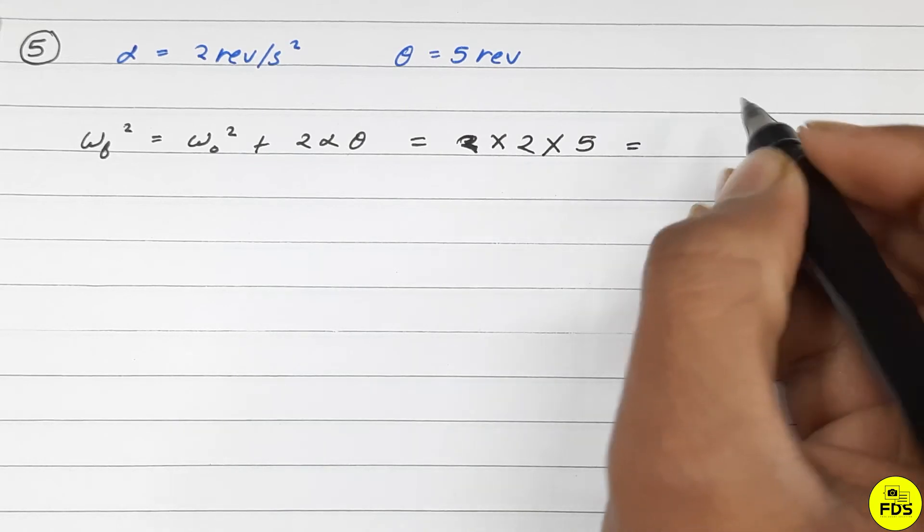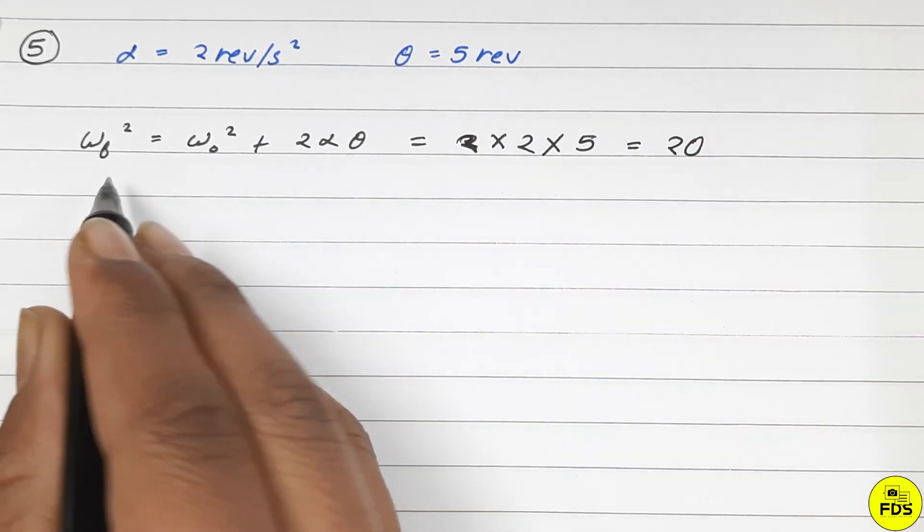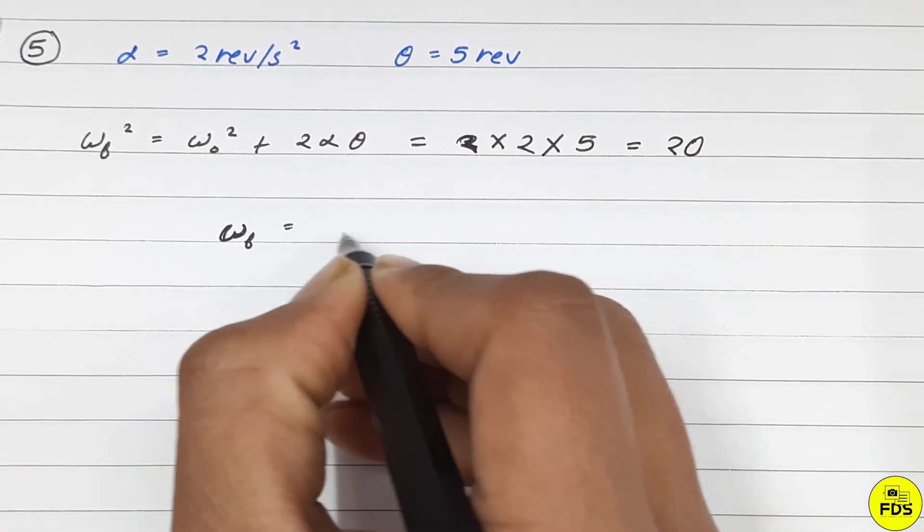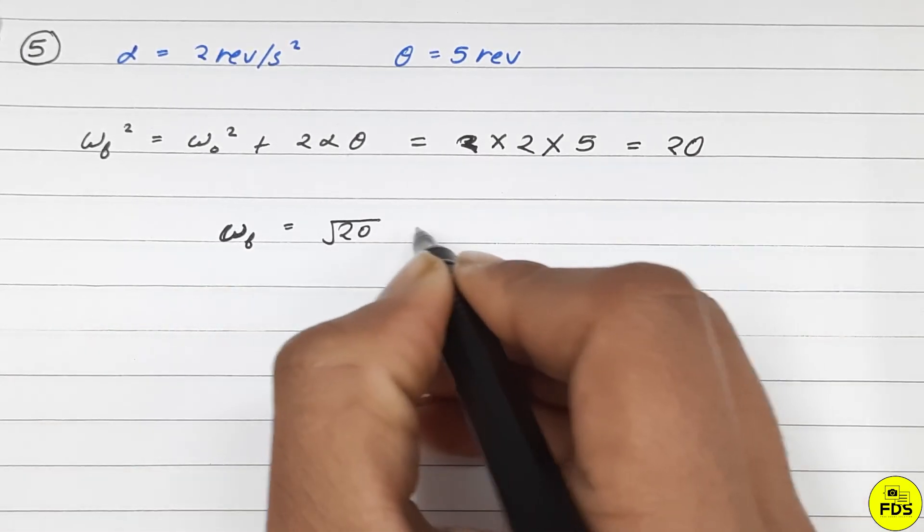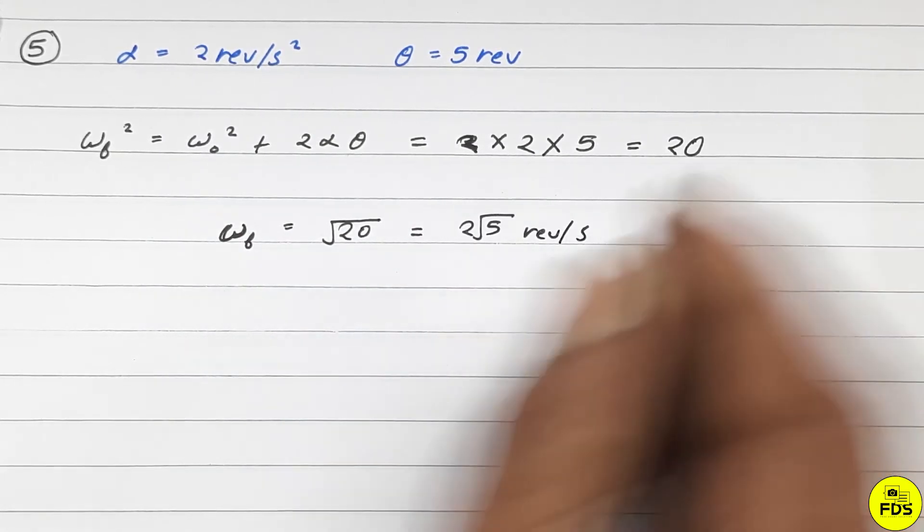This equals 20. Taking the square root, omega final equals the square root of 20, which is 2 root 5 revolutions per second.